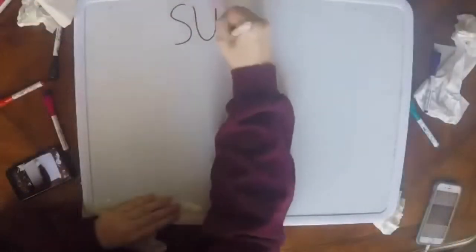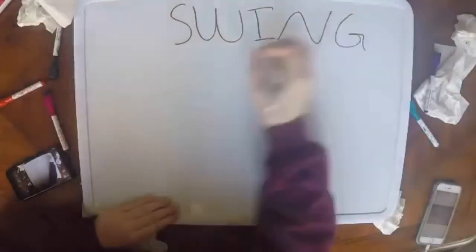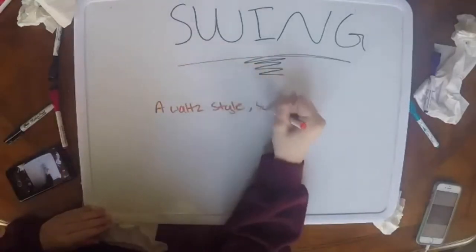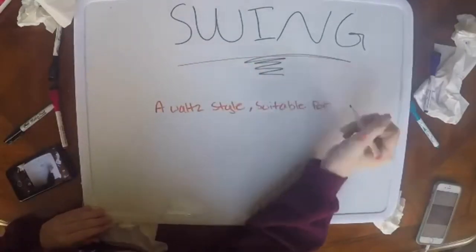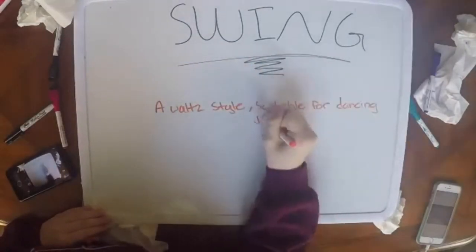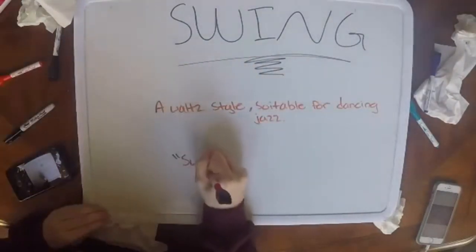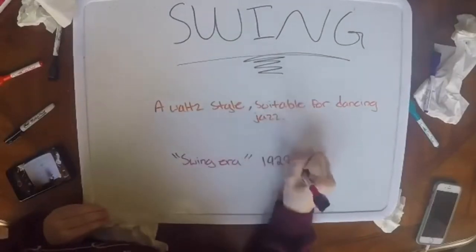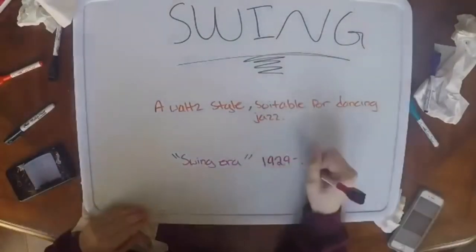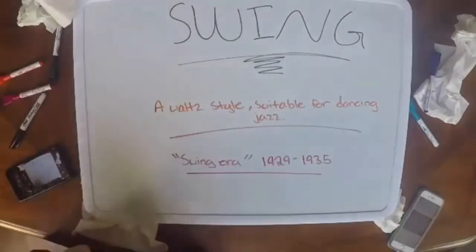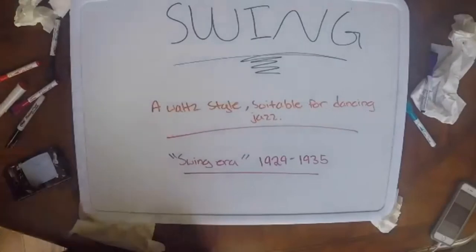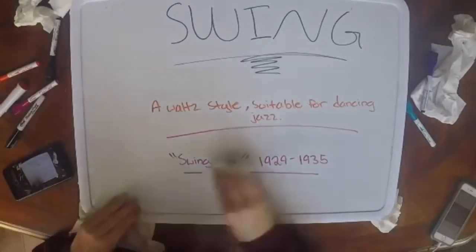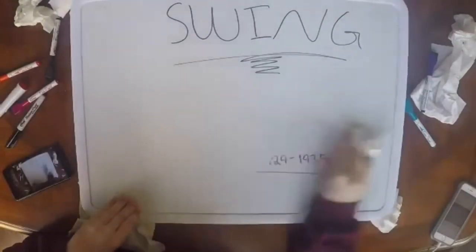Swing hit its peak in popularity from 1935 to 1946. Swing is a type of rhythm that gives the music being played a waltz-like feel, a kind of jazz generally played by a big band and suitable for dancing. That is one of the many reasons swing was created — for the danceable style.